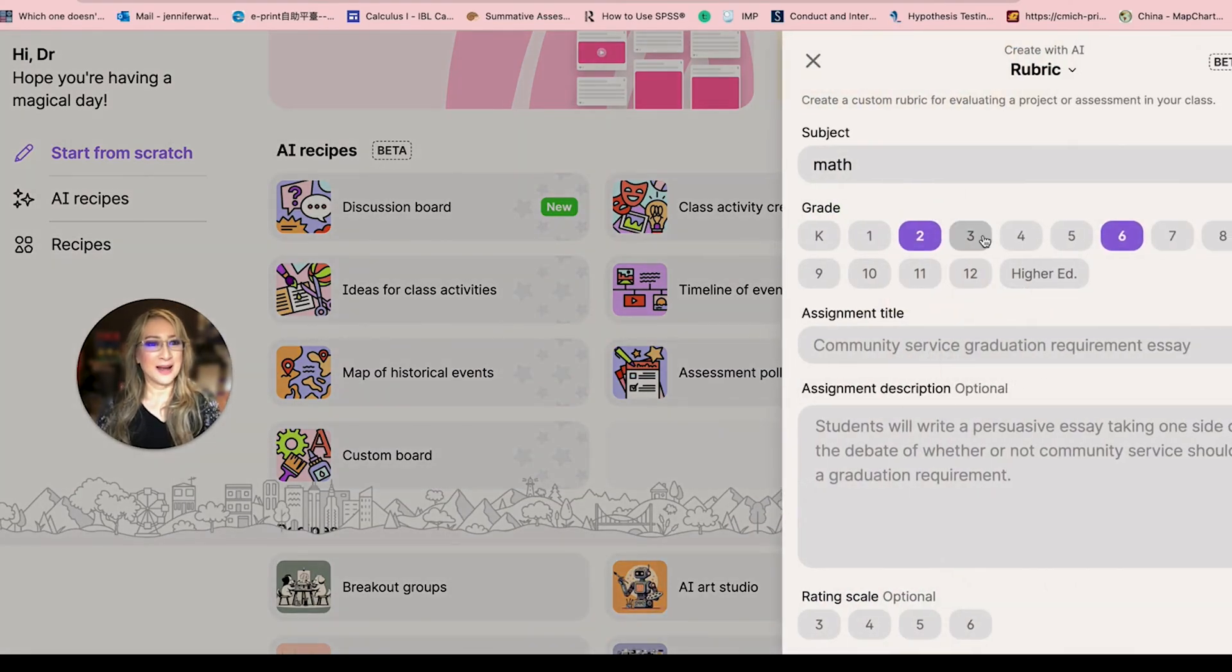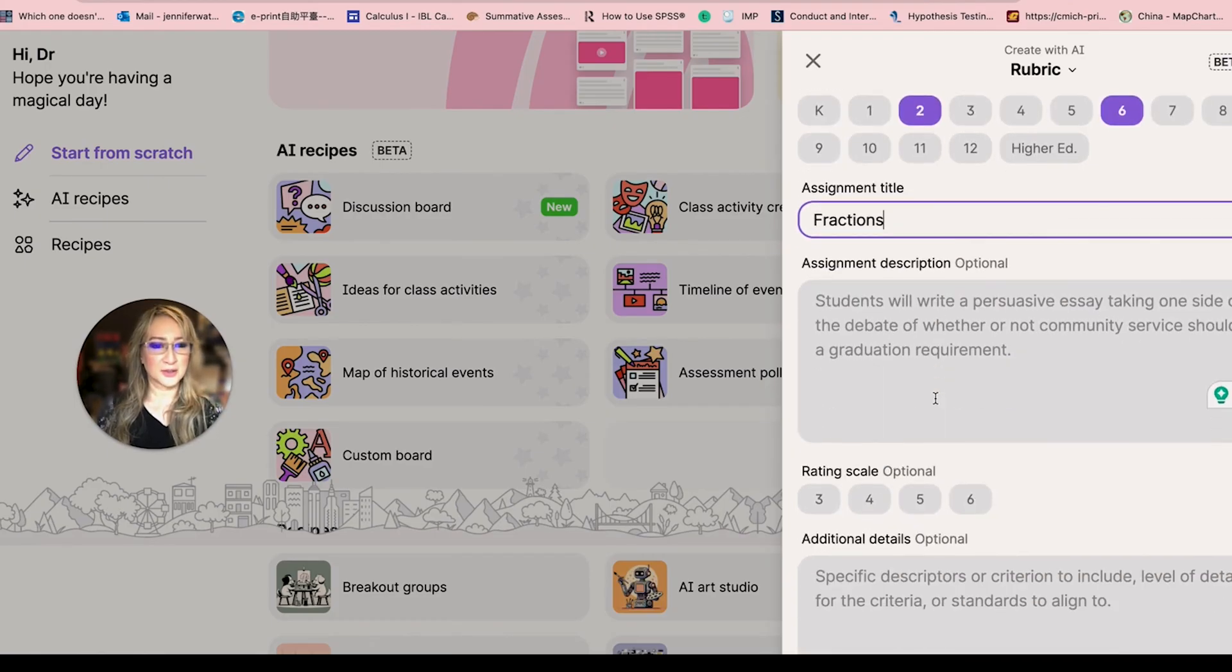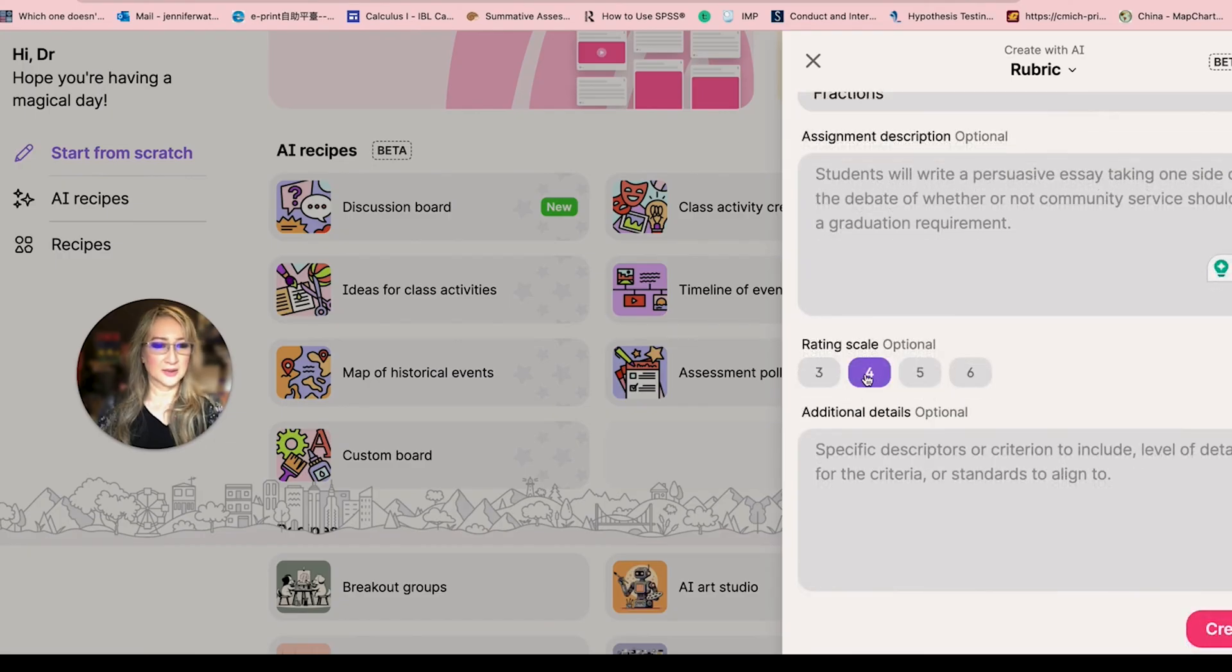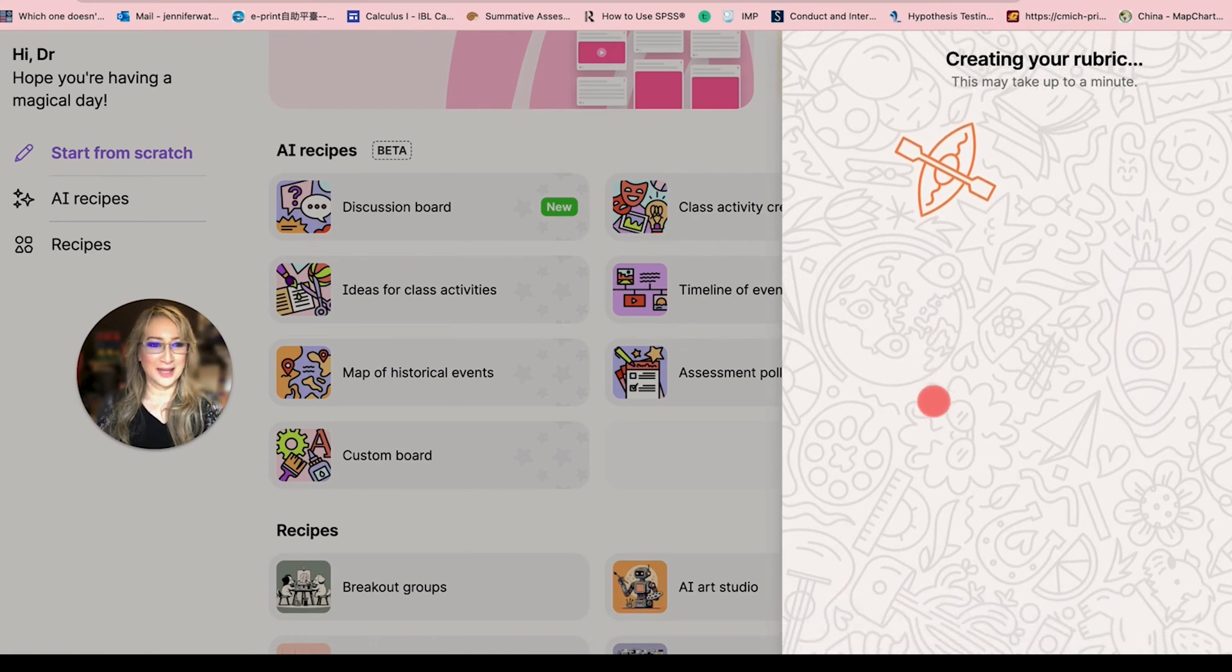So here math, I can do grade two, grade six. I'm just going to put fractions and see what it comes up with. I'm not going to put any description here. Let's do the rating scale of four, and let's have a look at the magic happen with the AI.